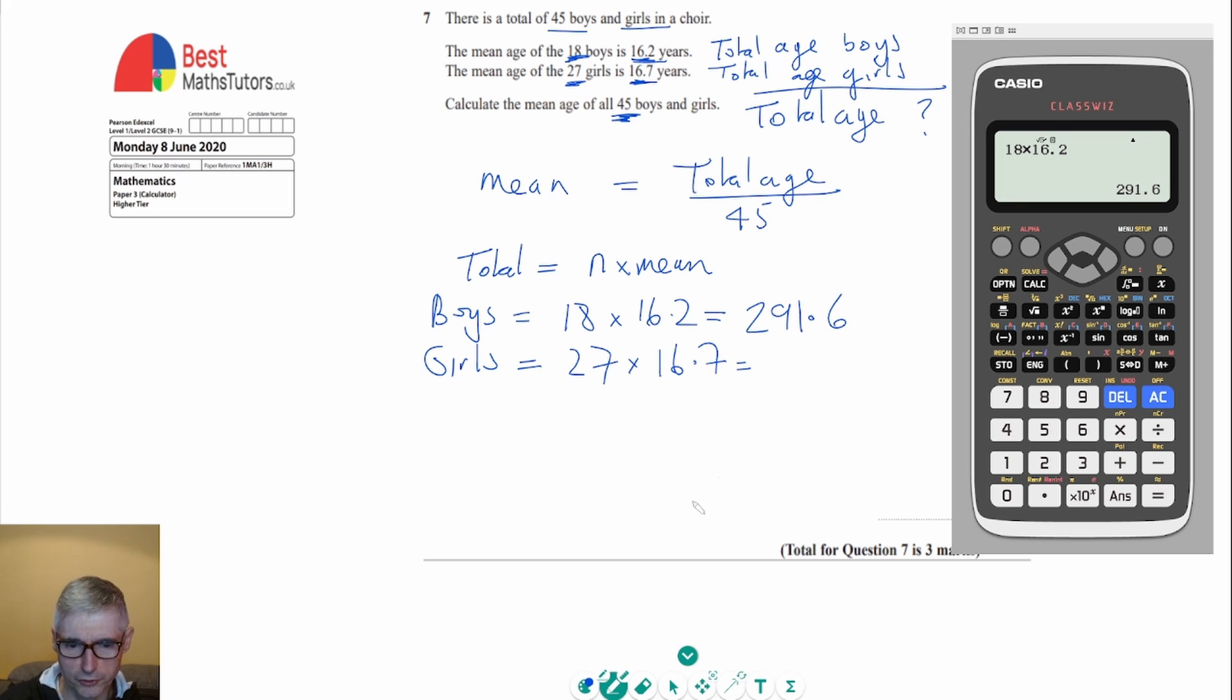So again, I'm going to do that on the calculator, get for that 450.9. So now what we're going to do is get the overall total just by adding these together, which we might as well again do on the calculator.